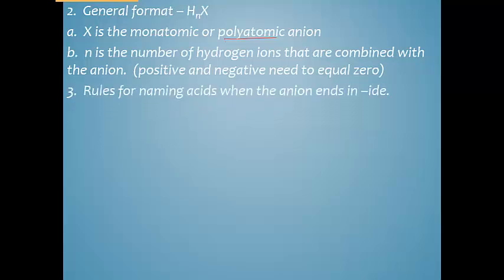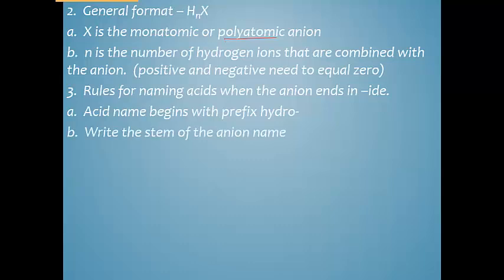Now there are three different rules for naming acids, and it depends on the ending of your negative ion. So if the ending is -ide, hydroxide, cyanide, chloride, fluoride, bromide, any of those elements off the periodic table, then what you're going to do is you're going to take the acid. The acid name is going to begin with hydro. So you'll start with the prefix hydro. Notice it's a dash, so it is a prefix. We're going to add to that the stem of the anion.